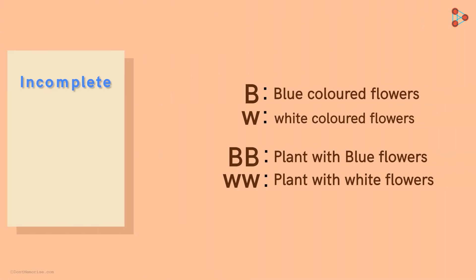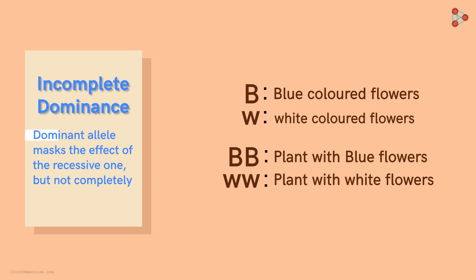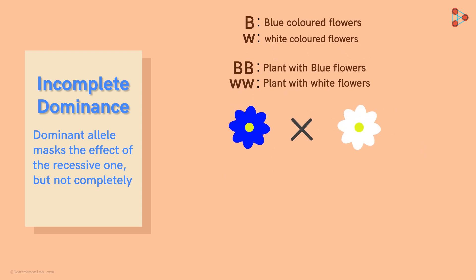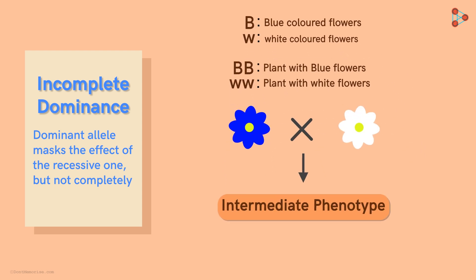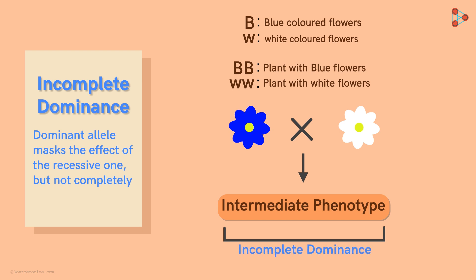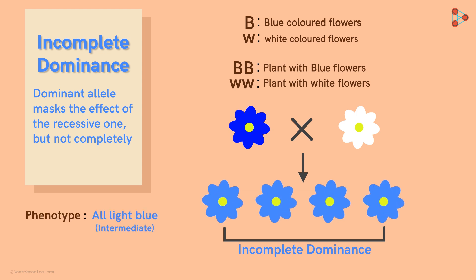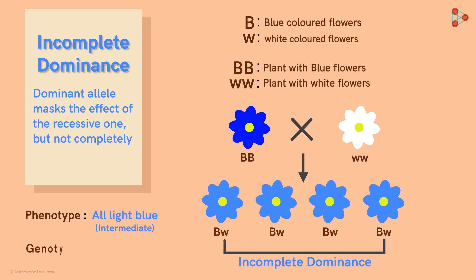Next is incomplete dominance. In this type, the dominant allele masks the effect of the recessive one, but not completely. A phenotype intermediate of the two parents is obtained in the F1 hybrid. In this case, an intermediate of the two colours will be obtained — perhaps a light blue colour. Theoretically, BB crossed with WW gives us BW, so all F1 hybrids carry both alleles and phenotypically show an intermediate colour between dark blue and white.